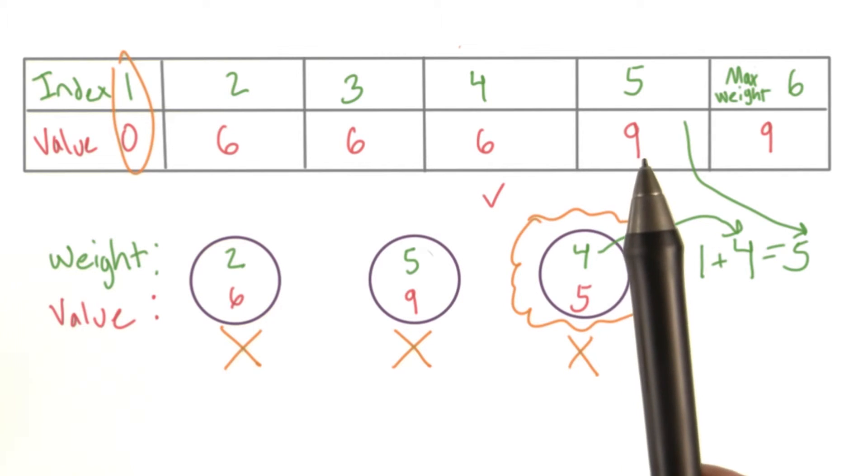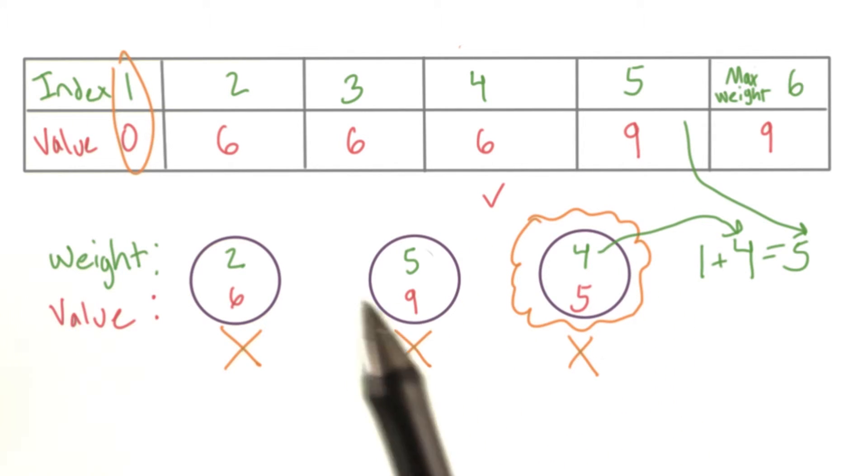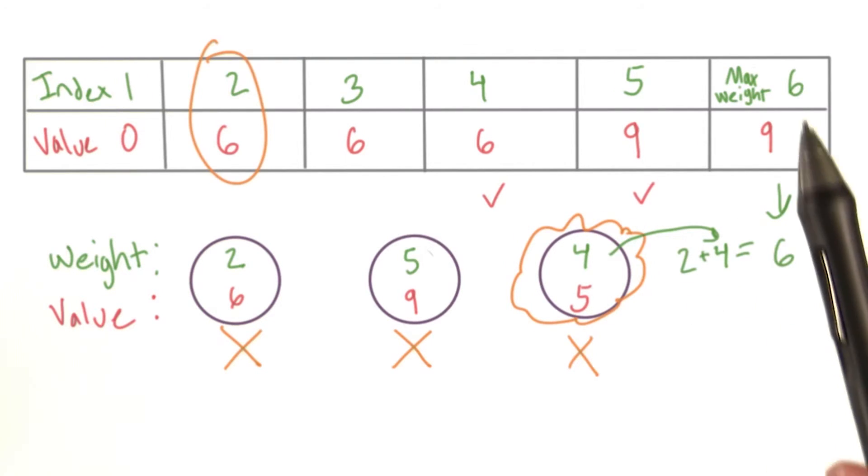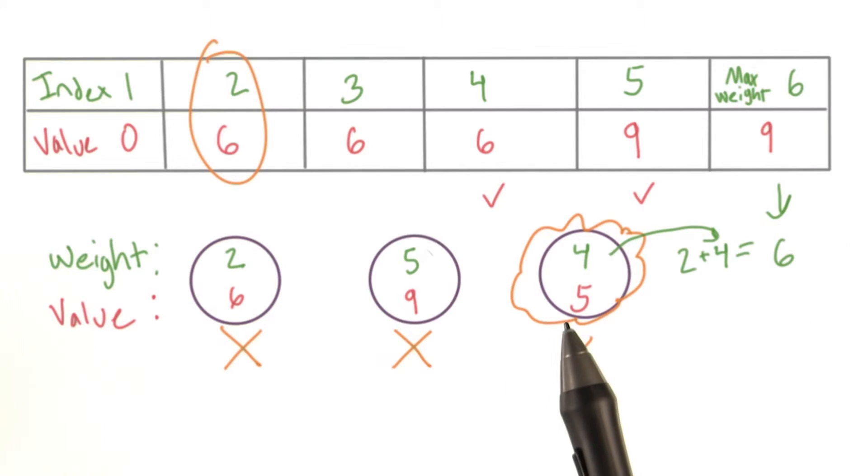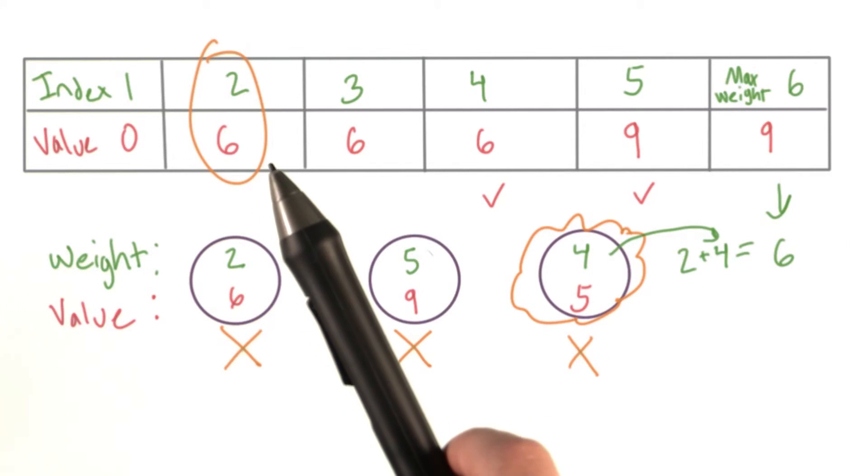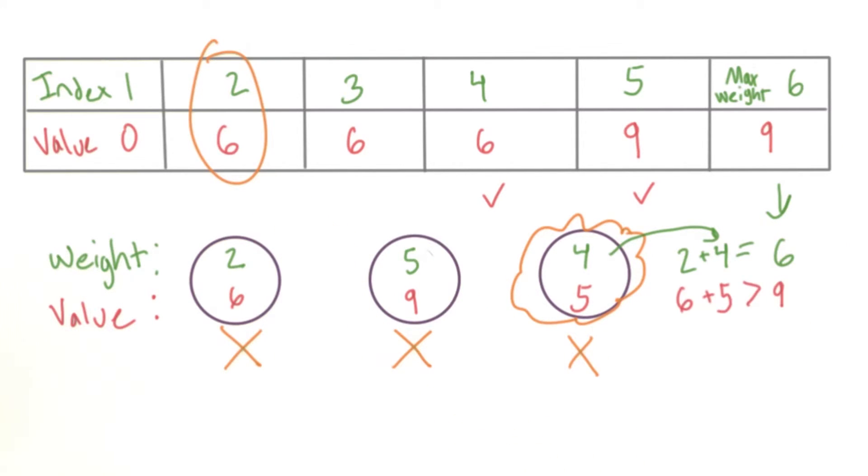We look at index 5 and compare it to our value plus the value at index 1. Since the old value is larger, we leave it as is. At index 6, we add our object value to the value at index 2 and end up with a bigger value. So we replace it. And we've solved the problem.